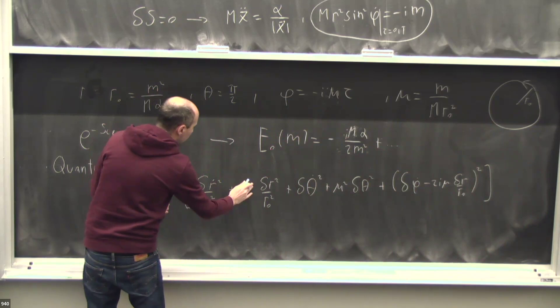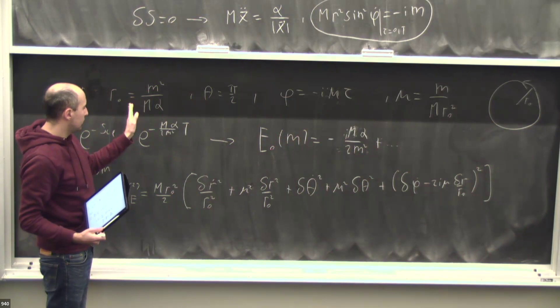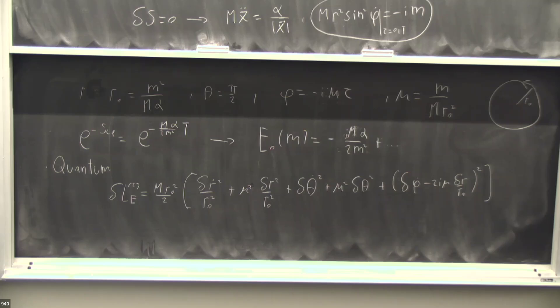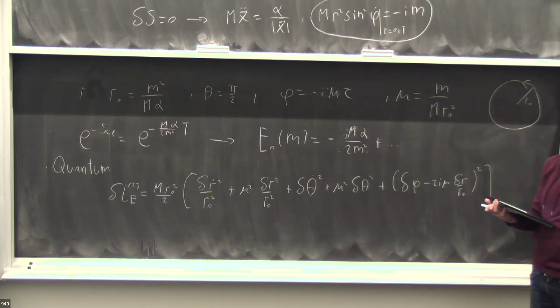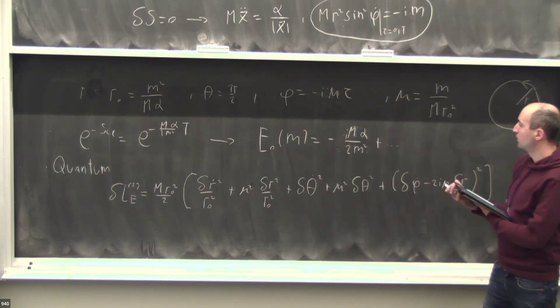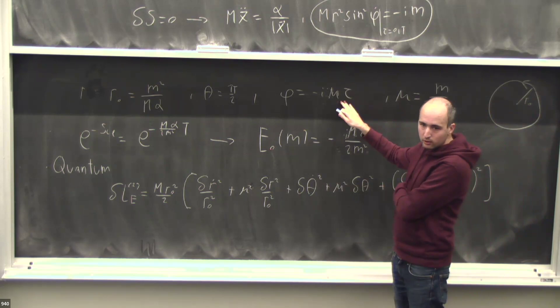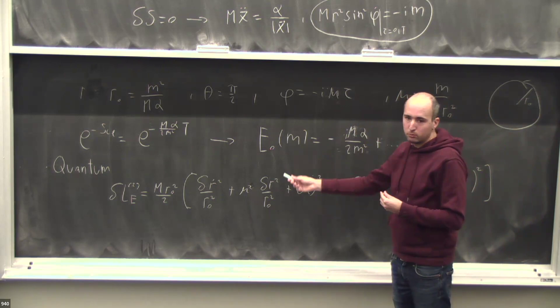So we expand the Lagrangian in quadratic perturbations. The quadratic fluctuation action describes the equations for r, theta, and phi. The quadratic action gives two harmonic oscillators with frequency mu and one harmonic oscillator with frequency zero. So omega_r equals omega_theta equals mu, and omega_phi equals zero. This means I can create particles with energy mu on top of these states. These particles correspond to other states in the SO(3) multiplet, or states with different radial quantum number n but the same total quantum number.